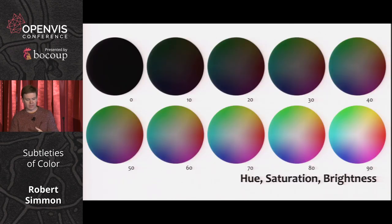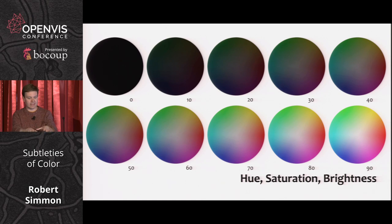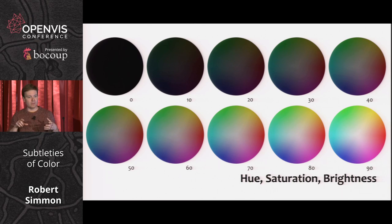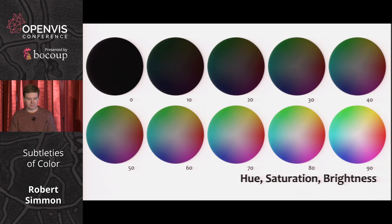HSB is not the same thing as LCH - HSB is just a direct linear translation of RGB and simply forms a cylinder. In theory each position is equal lightness, but you'll notice they're not actually equally light. There are actually colors you can specify in HSB that mean nothing, because there's no visible difference between them to us.